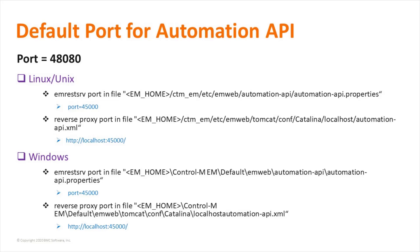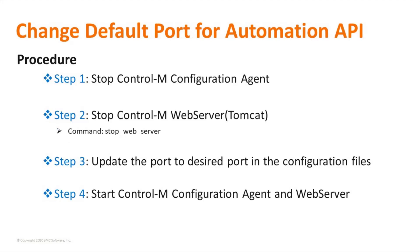By default, the Controlium Automation API server is listening on port number 48080. For security reasons, it can become necessary to change the default port. This is the procedure to change the default port for Automation API.